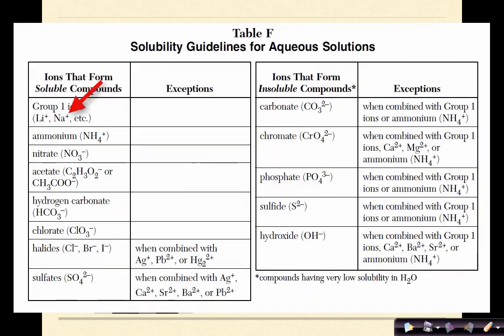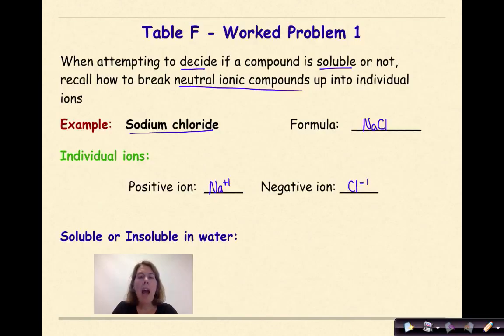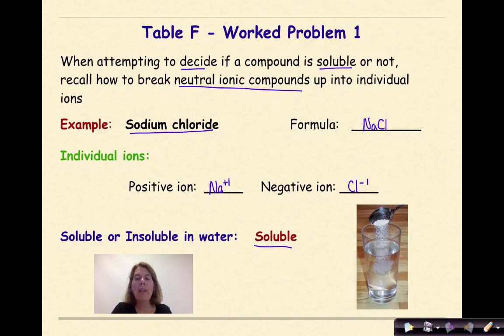So, now I look at table F. And I can find the sodium ion on table F. It's over on the left-hand side. And it falls in the soluble compound, always. And then I can even find the Cl-1. And that is also in the left-hand side, in the soluble column. And the Cl-1 here isn't bound to one of the exceptions. Therefore, I would classify NaCl as soluble. This is something that when I add salt, table salt, sodium chloride to water, it will dissolve.